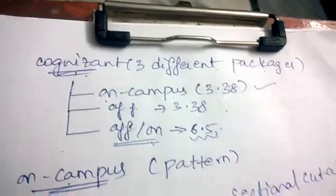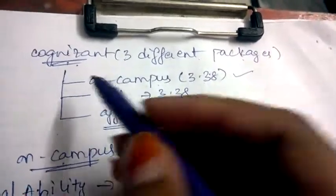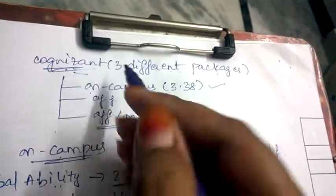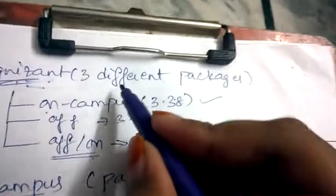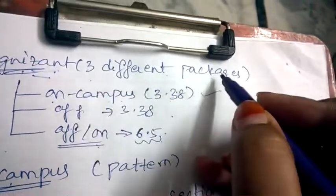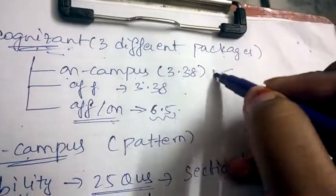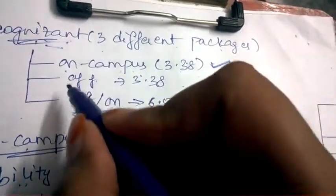Hello friends, welcome back to Best Way to Study. In this video, we are going to see the exam pattern of Cognizant. Coming to Cognizant, it provides three different packages. For on-campus, it provides a 3.38 lakh package.